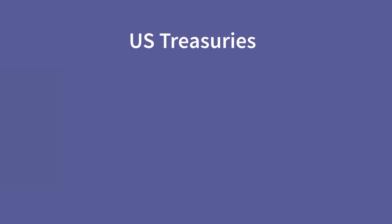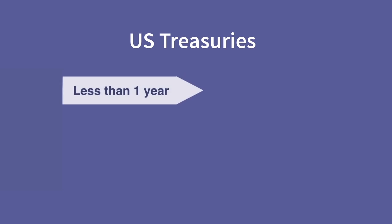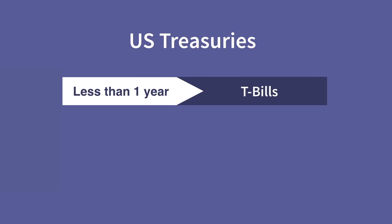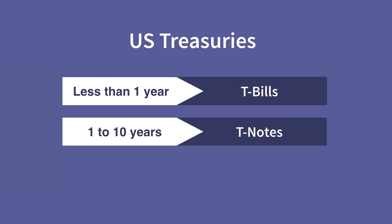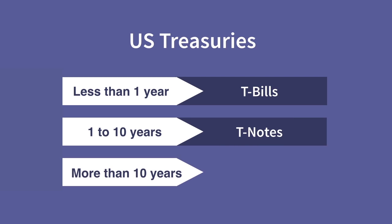One interesting point to note is that US treasuries have different names related to their term to maturity. Securities issued with a term to maturity of less than one year are called T-bills. Between one and ten years, they're called T-notes. And beyond ten years, they're called T-bonds. This practice of naming different maturities is not isolated to the US and examples can be found elsewhere around the world.